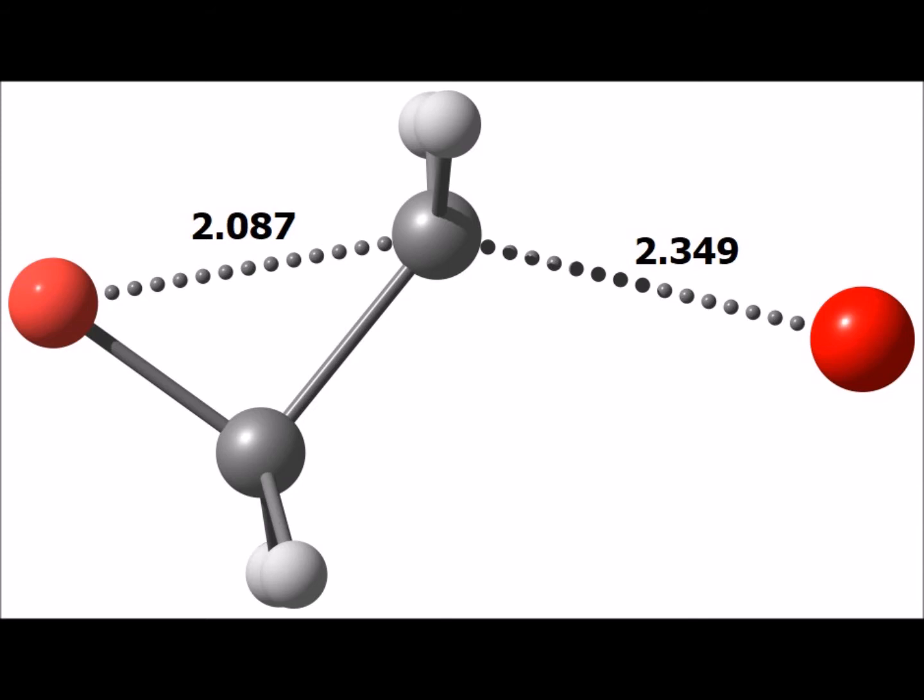A similar reaction could have been run, but now with bromine as the leaving group. The bromine is the bright red atom to the right, the alkoxide is the nucleophile to the left, and we see the bond lengths in angstroms at the computed transition state for this intramolecular Williamson synthesis.